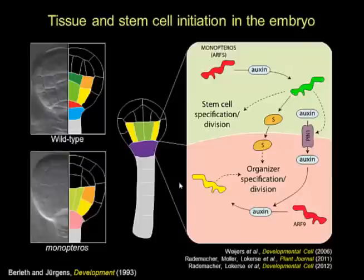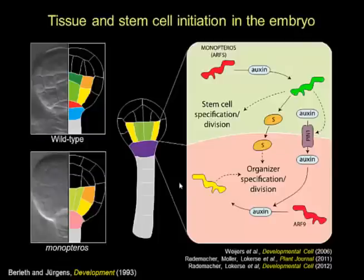In the past years, we have exploited the fact that Monopteros is a transcriptional regulator to identify genes that are activated by it, and through this we hope to find factors that control the different processes that are initiated — the specification and division of tissues and stem cells cell autonomously, but also the control of the specification and division of the organizer cell, which involves mobile signals that were until recently not identified. I will give you two examples of our recent findings that have allowed us to identify such a mobile signal, and also a mechanism controlling the orientation of division in the stem cells.